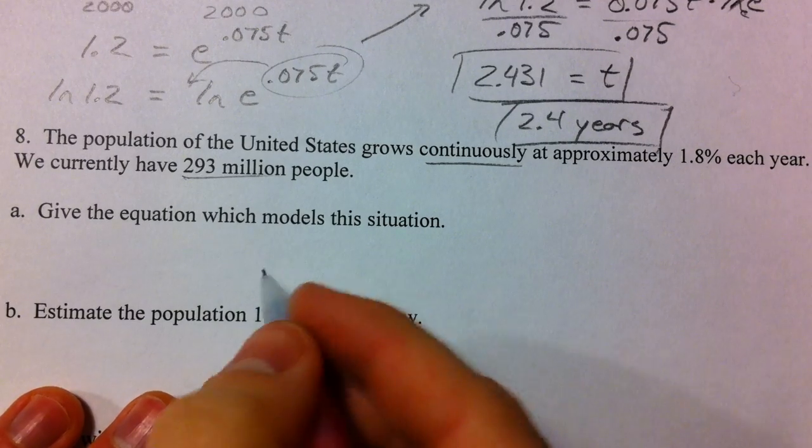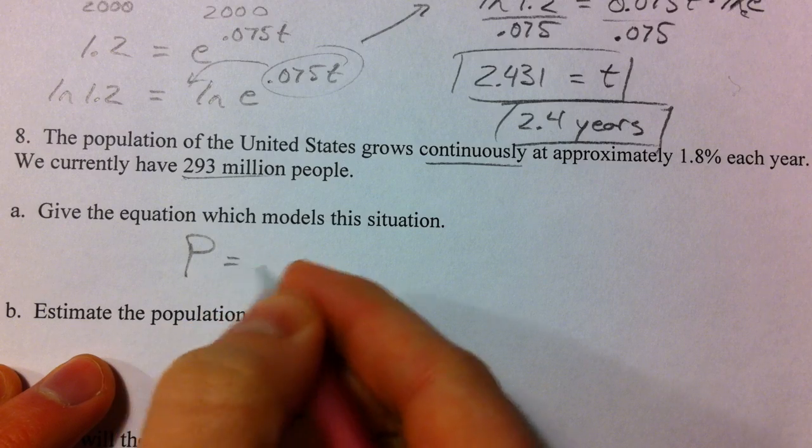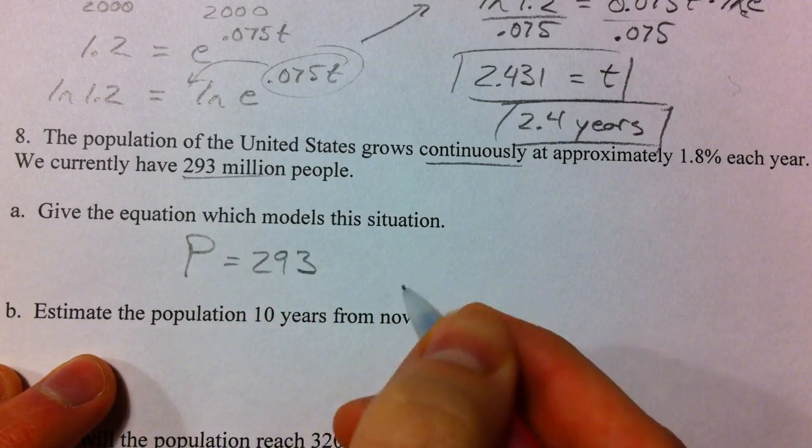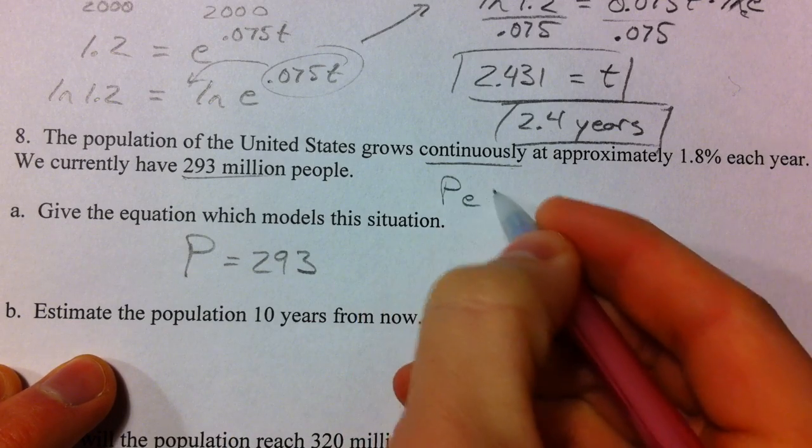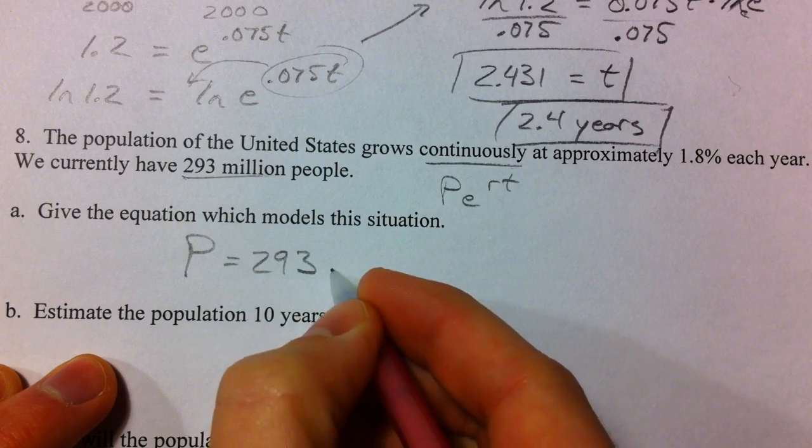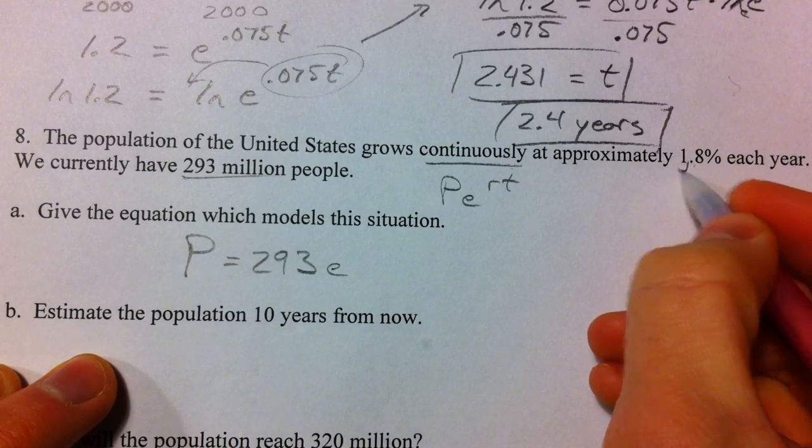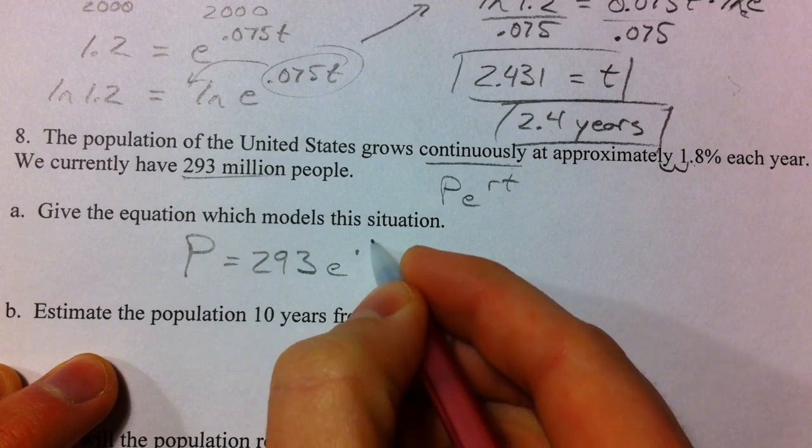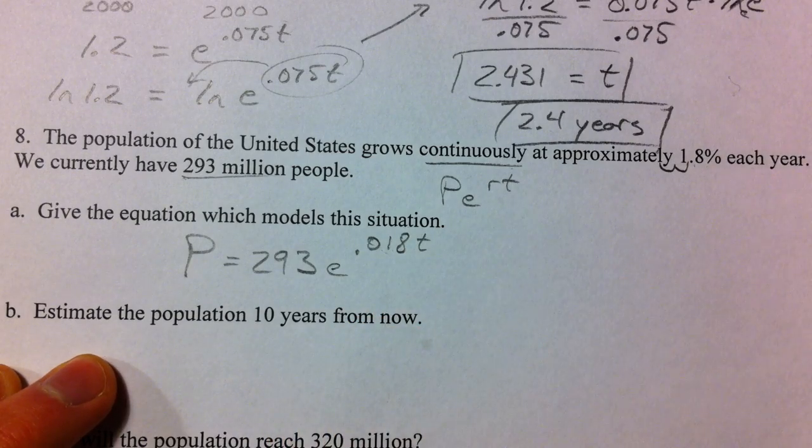So what we're talking about is the population is currently 293, so that's our starting value, growing continuously again. So we're going to use this E to the RT again. E to the 1.8. So we're going to move that 1, 2. So we're going to have 0.018, because we've moved it two spots, to the T.